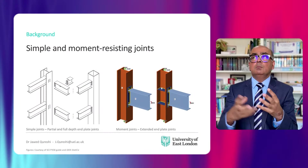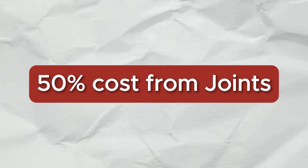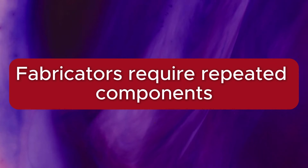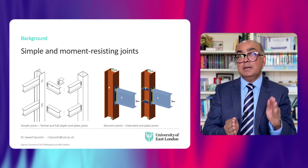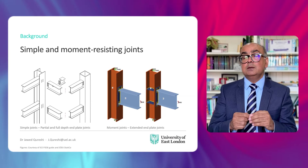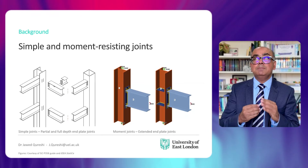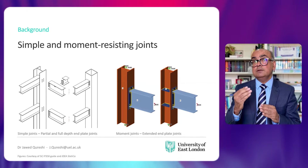First, I want to give some background to the work — what are simple and moment-resisting joints? As much as 50% of the cost of the frame comes from joints, and standard connections reduce the cost of the joints. In industry, most of the time standard connections are preferred. Fabricators normally design connections, and joints require repeated and standard components. Joints between members are of two types: simple and moment or fixed joints. Joints in simple frames are assumed to be nominally pinned and in moment frames fully rigid or fixed.